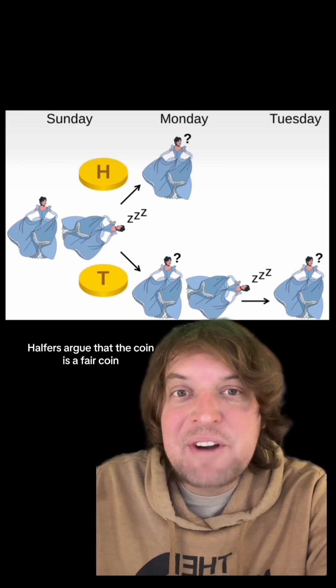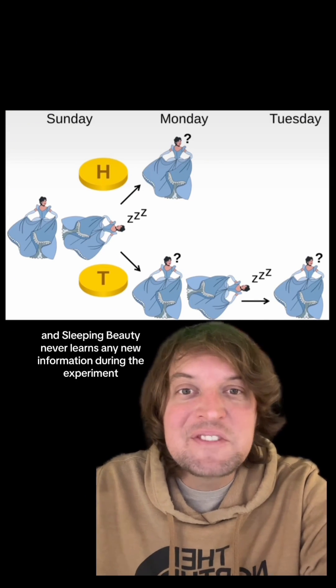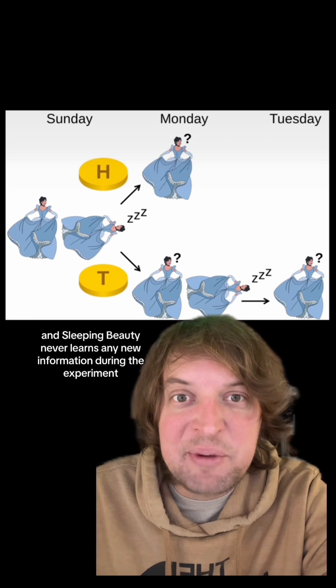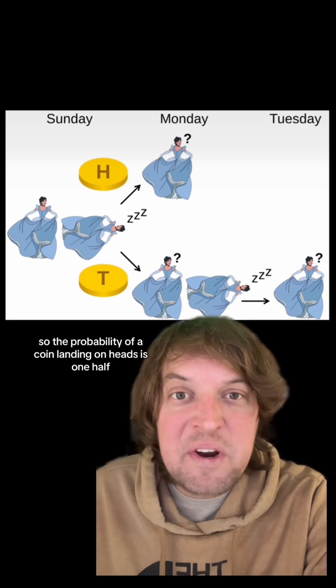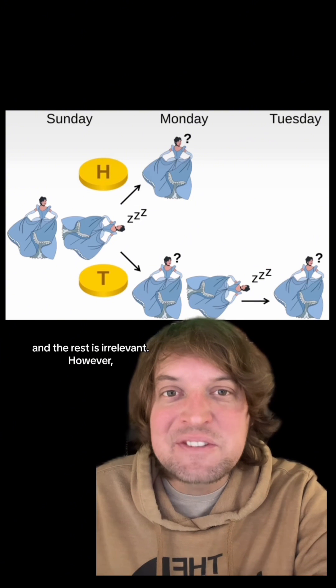Halfers argue that the coin is a fair coin and Sleeping Beauty never learns any new information during the experiment. So the probability of a coin landing on heads is one-half. Simple as that, and the rest is irrelevant.